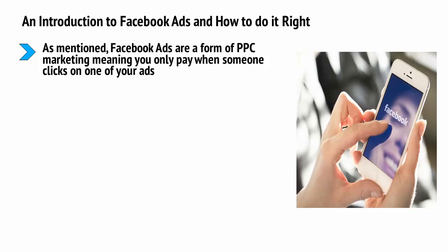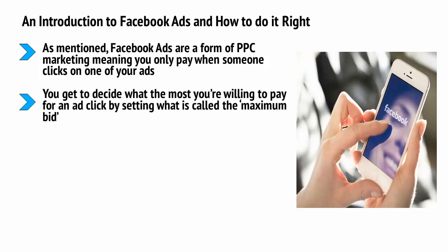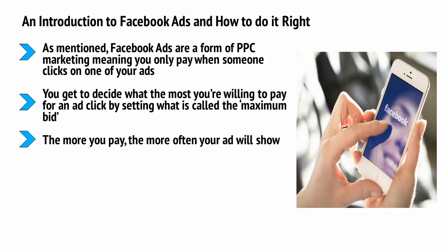As you might have guessed, Facebook ads will appear on Facebook, thereby giving you the opportunity to advertise to anyone who uses the social media platform. You get to decide the most you're willing to pay for an ad click by setting what is called the maximum bid. Each time two ads are suitable for a single position, they will enter into an automated bidding war, and if your maximum bid is highest, your ad will show. The more you pay, the more often your ad will show.